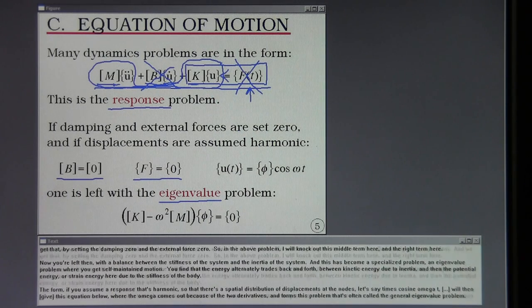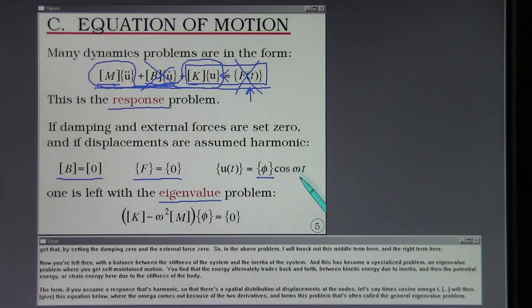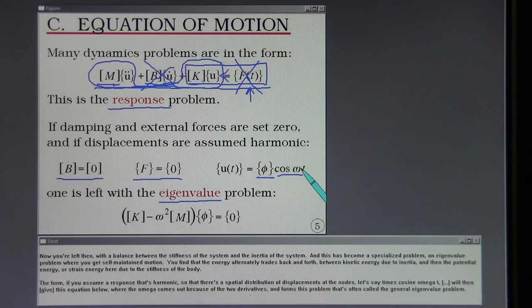The form, if you assume a response that's harmonic so that there's a spatial distribution of displacements at the nodes times cosine omega t, you will then get this equation below where the omega comes out because of the two derivatives and forms this problem that's often called the general eigenvalue problem.